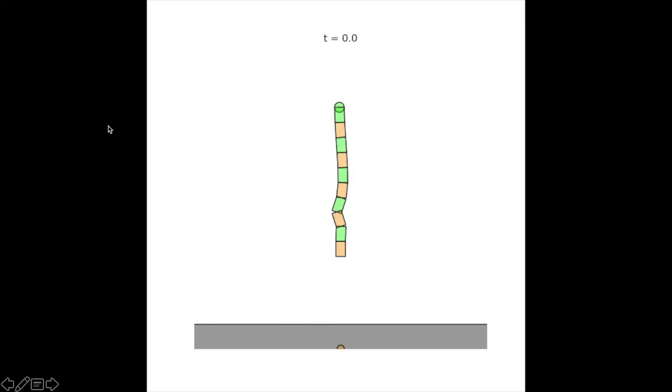This is a solution found by the optimization solver. As we can see, the solver actually found a trajectory where the rope is making contact with the table, even though we didn't specify that in our optimization program.